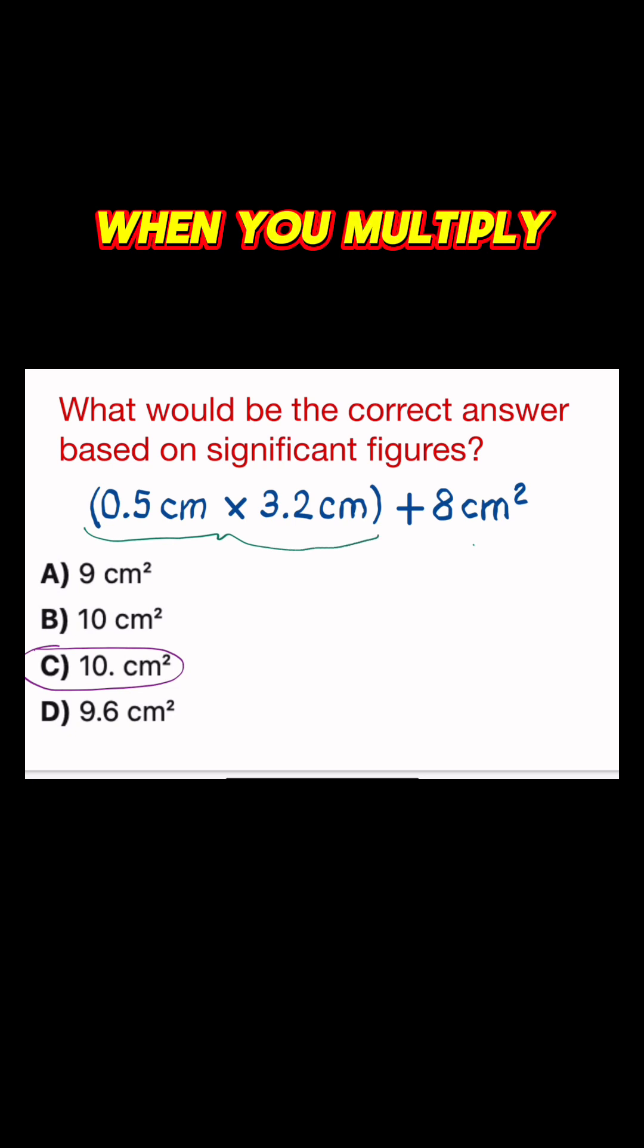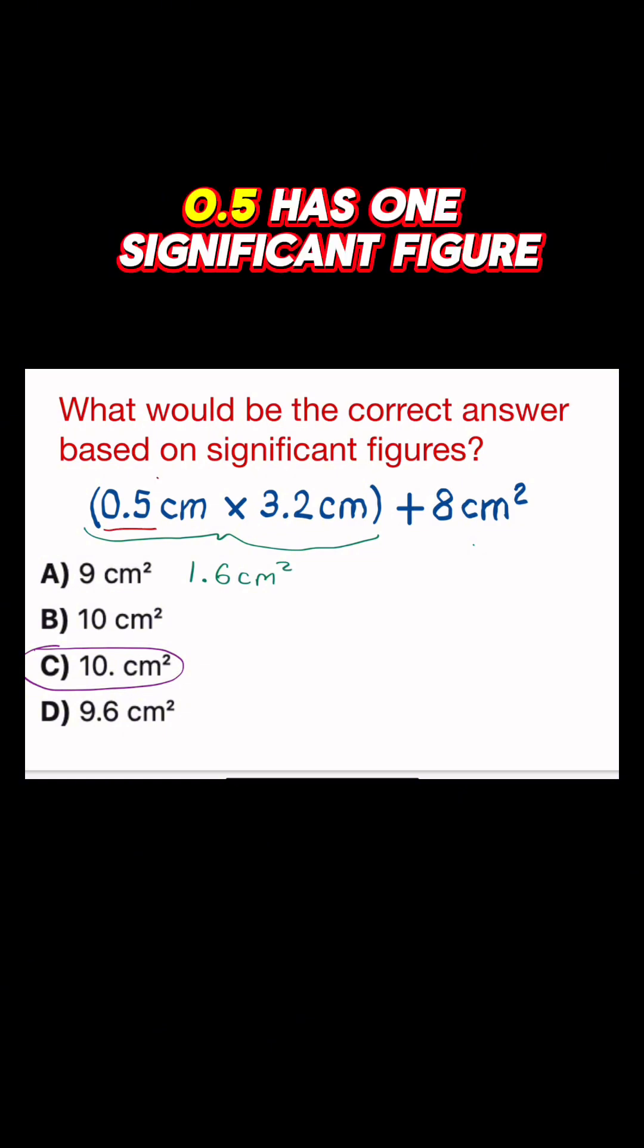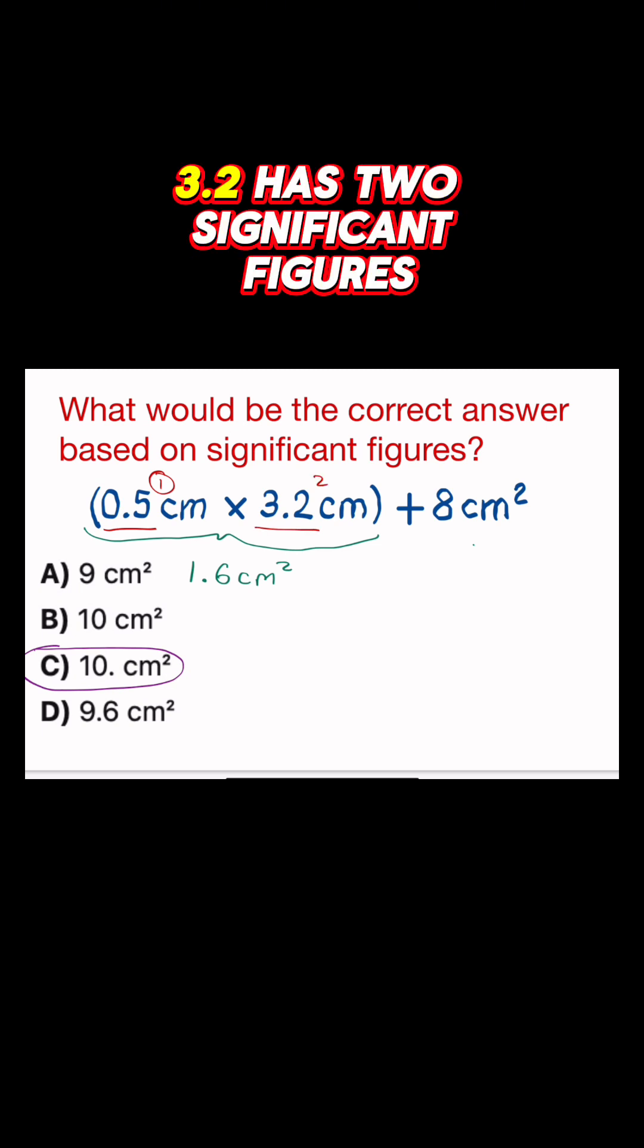When you multiply 0.5 centimeters times 3.2 centimeters, you do get 1.6 centimeters squared. Looking at significant figures, 0.5 centimeter has one significant figure. 3.2 centimeters has two significant figures.